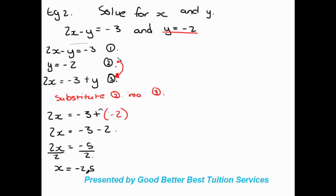Reviewing the steps quickly: we were given two equations, labelled equation 1 and equation 2. We looked at what was given — in this case Y was given — so we made X the subject of the other equation, putting it alone before the equal sign. Then we substituted the given value (equation 2, Y equals negative 2) into equation number 3, and solved for X.